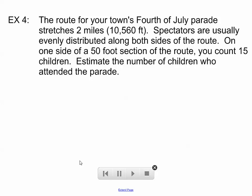Okay, so let's use proportions to solve real-world problems here. The route of your town's 4th of July parade stretches 2 miles, which is about 10,560 feet. Spectators are usually evenly distributed along both sides of the route. On one side of a 50-foot section of the route, you count 15 children. Estimate the number of children who attended the parade. There's a couple different ways we could set this up. Here's the way I'm thinking about it. I'm saying that there are X children along the 10,560-foot route. Then I'm also thinking that there are 30 children, because one side has 15, that would mean two sides have 30, along a 50-foot section of the route. So I'll use cross-products, 50 times X is 50X, and 10,560 times 30 is 316,800.